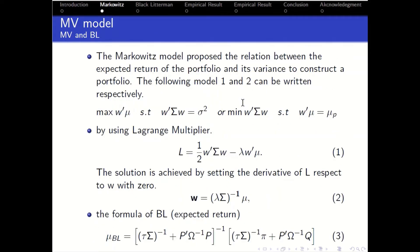First, we review both mean variance model and Black Litterman. Mean variance model can be interpreted as maximize the goal function or minimize the risk of portfolio in Markowitz model. The solution can be achieved by using Lagrange multiplier.